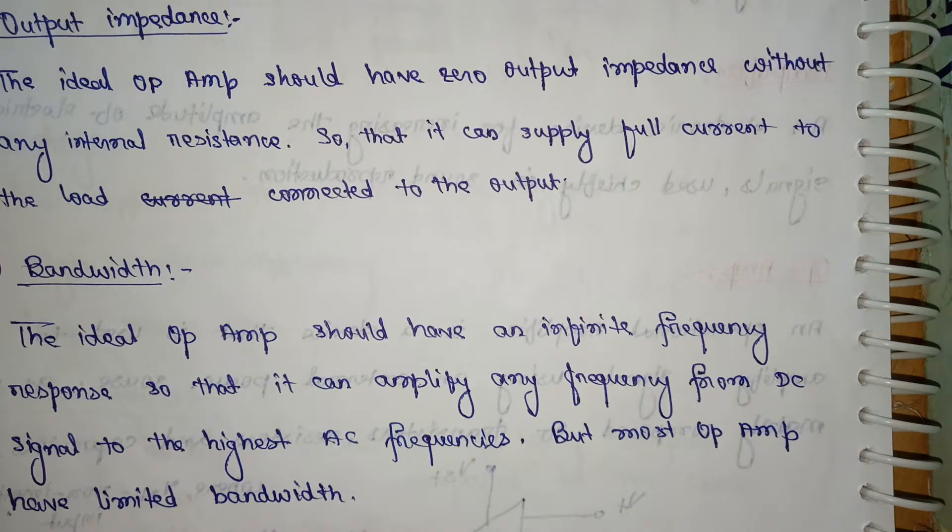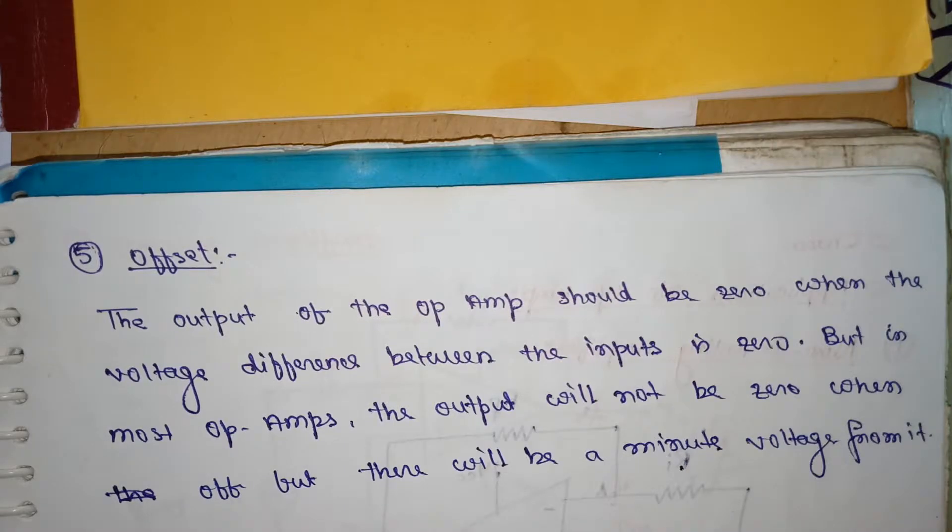An ideal op-amp can amplify any frequency from DC signal to the highest AC frequencies, but most of the op-amps have limited bandwidth. What is offset?